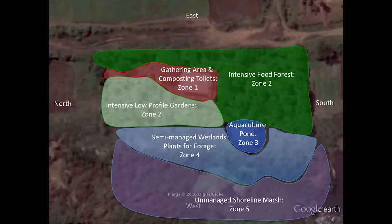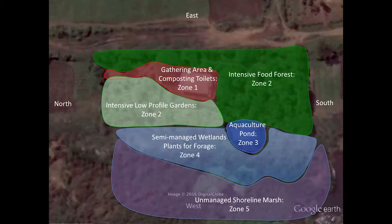The pond is zone 3, as it's a managed fish production system. Remember how the water from that pond is pumped with a windmill up to irrigate the food forest. Then the marshy area below the pond is filled with semi-cultivated wetland plants, and finally there's the uncultivated marsh that borders Lake Victoria.